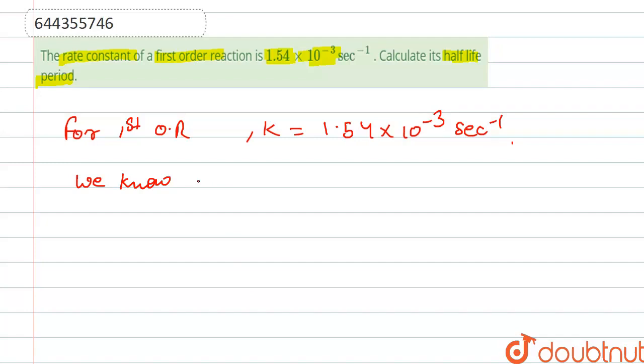t₁/₂ is equal to 0.693 upon k. So here k is given, that is 1.54 × 10⁻³.